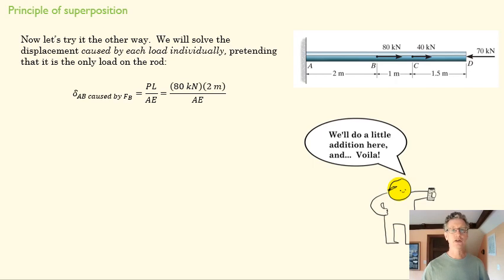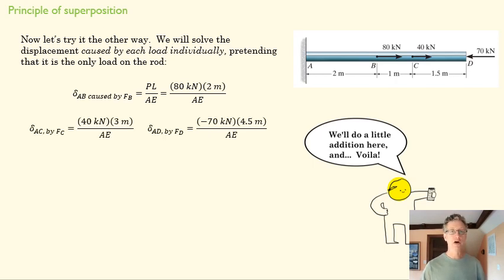Now, when we go to find the change in AC caused by force C, that is by this 40 kilonewton load here, we're not just going to deal with BC. If this were the only load here, this entire section would be deformed by that 40 kilonewton load. So we want to figure out what that full deformation is that's created by that 40 kilonewton load. So we use the whole length of AC. So again, if this were the only force here, we would say that's my length. And then my internal resultant force would be 40. And so that's our equation there.